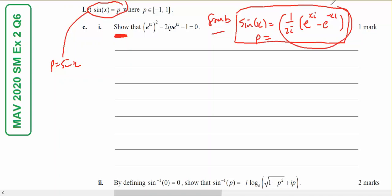I'm going to do a substitution. I'm going to put this where p appears and show that I get an answer of 0. So e to the ix squared minus 2i times one over 2i, e to the ix minus e to the minus ix, minus 1 equals 0.